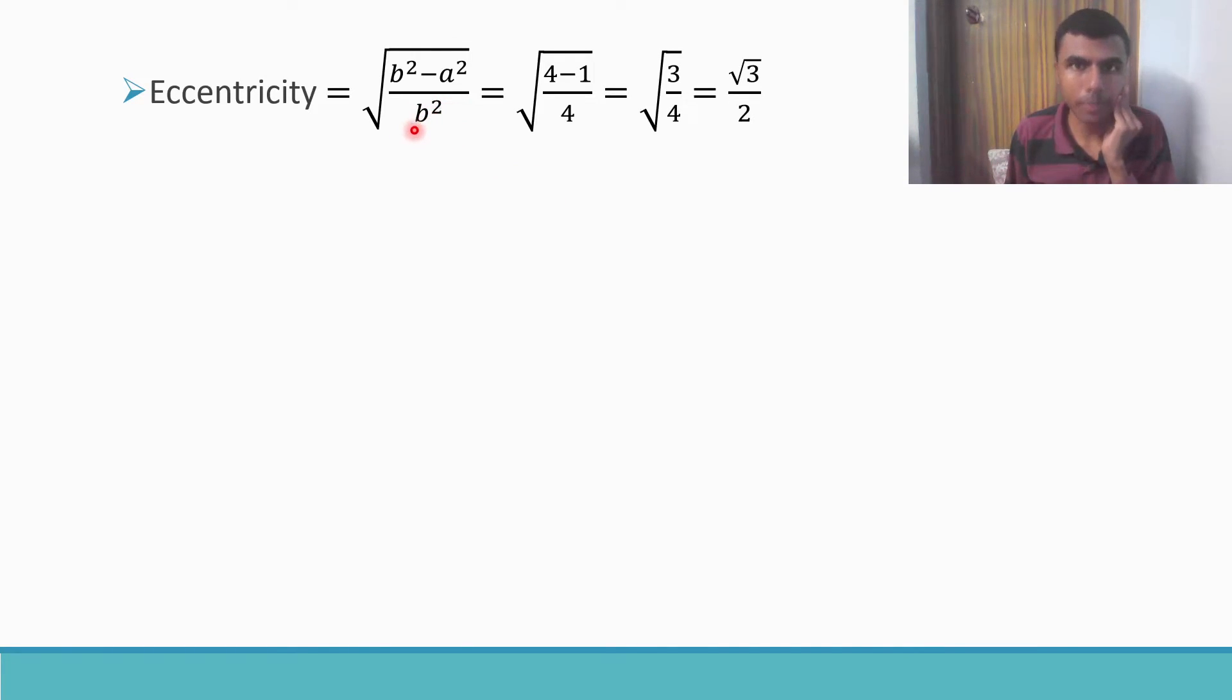Eccentricity formula when ellipse is vertical is √(b² - a²)/b². You know everything right? b² is 4, a² is 1, substitute. This is what you have. √4 is 2, so that's why eccentricity = √(4-1)/4 = √3/2.